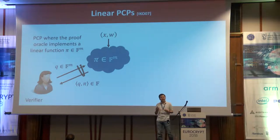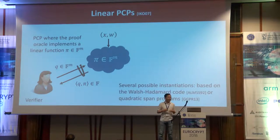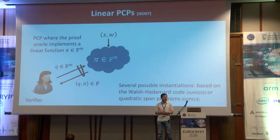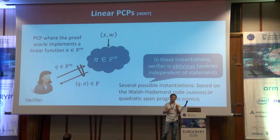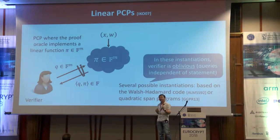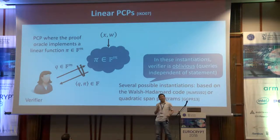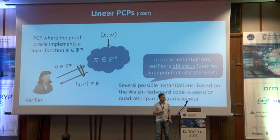There are many concrete instantiations of the linear PCP from different constructions, such as the Walsh-Hadamard code or the quadratic span programs of Gennaro et al. One of the most useful properties that these linear PCPs satisfy is that the verifier is actually oblivious — the queries that the verifier submits to the linear PCP oracle do not depend on the choice of the statement. It turns out this is very useful for building SNARKs.